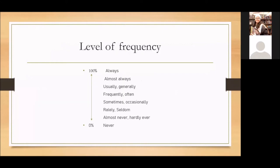Now, the level of frequency. With 100%, we have always. Then we have almost always, usually and generally, frequently and often, sometimes and occasionally, rarely and seldom, almost never and hardly ever. And with 0% of frequency, we have never.